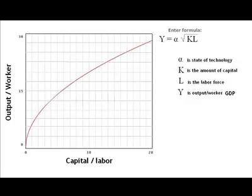The production function I'm going to use in this video is the Cobb-Douglas, which takes the form: GDP equals the state of technology times the square root of capital times labor.